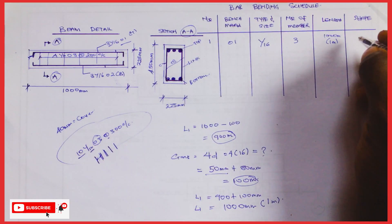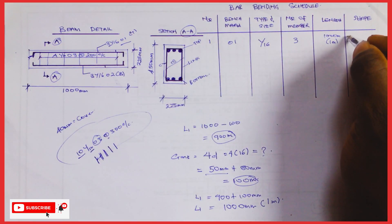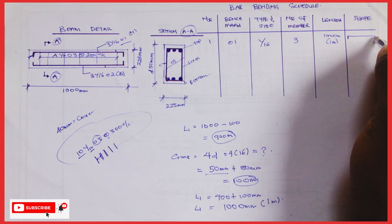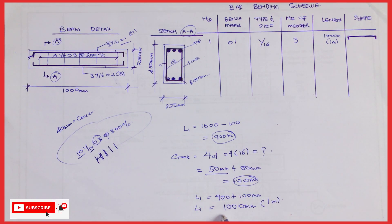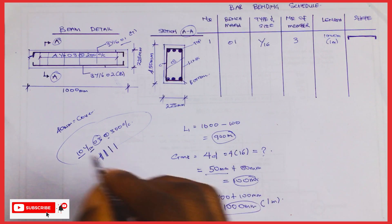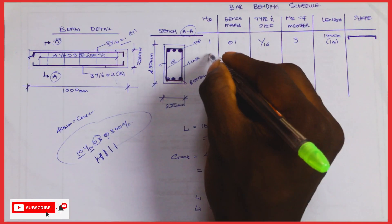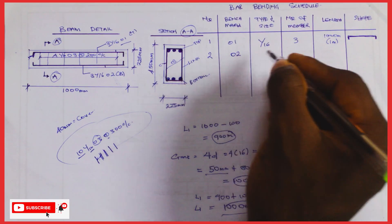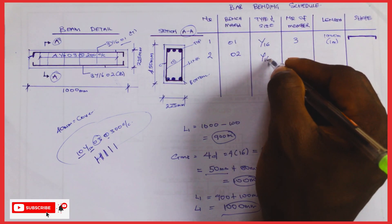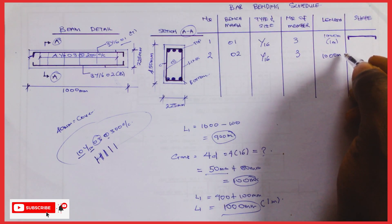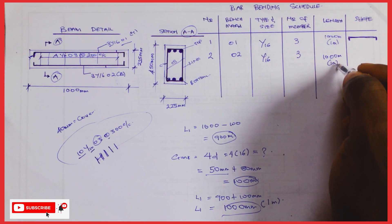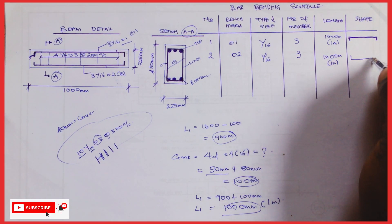The shape of bar 01 is visible in the drawing — it has cranks at both ends. The same calculation applies to bar 02 since it is the same span from end to end: Y16, 3 members needed, length is also 1000mm, but the shape is just facing the opposite direction — it's the bottom bar.